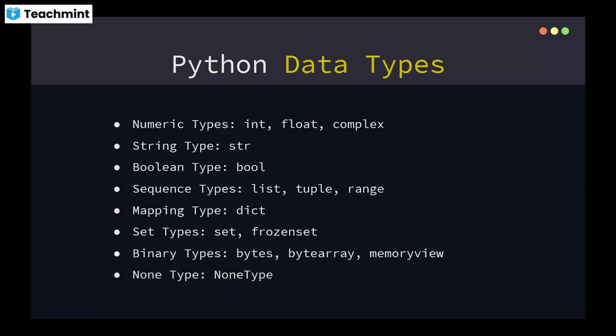Data types are different types of data we can store in a programming language. We've stored text data, number data, and float data in the command prompt earlier. Python supports all these types. Importantly, Python is a dynamically typed language, meaning you don't have to declare the type of data you're assigning.